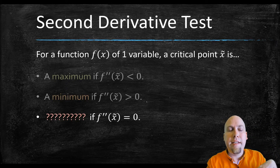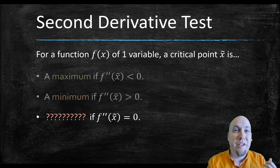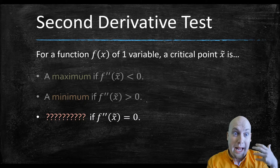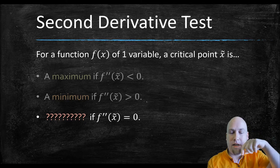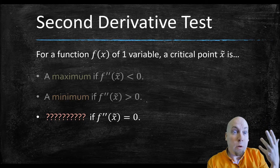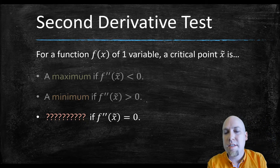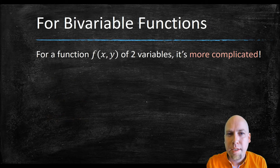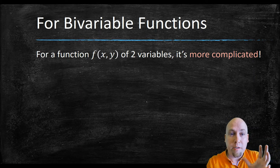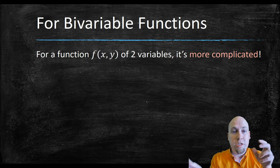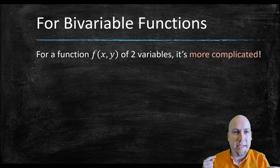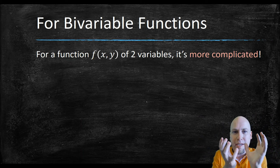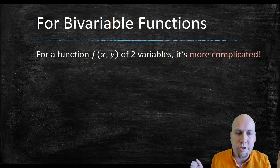The other possibility is maybe your second derivative is zero, and your conclusion in that case is just no conclusion. Maybe it's concave up, maybe concave down — maybe a minimum, maybe a maximum, or maybe neither. For functions of two or more variables, the answer gets more complicated. It's trickier to figure out concavity because the function can be concave up in some directions and concave down in different directions.